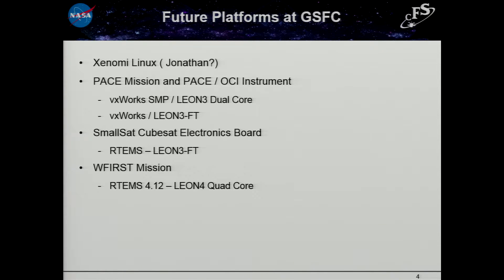Some of the work we want to do coming up at Goddard: we have the PACE mission and the PACE OCI instrument, and they'll be using VxWorks SMP on a LEON 3 dual core. The same processor card has a LEON 3 FT and an FPGA. We also have a board called the SCEB — the SmallSat CubeSat Electronics Board — which has the same RTG4 FPGA and the LEON 3 FT processor, and we're planning on using RTEMS 4.11 for that.